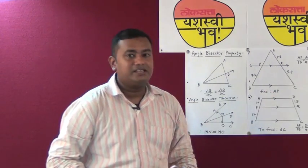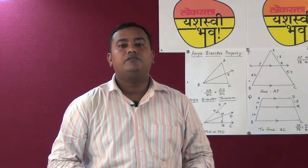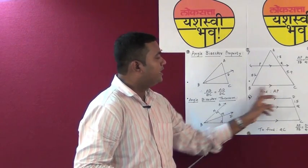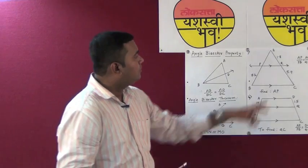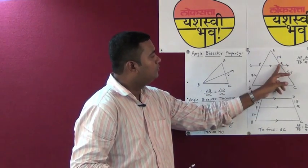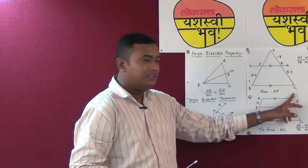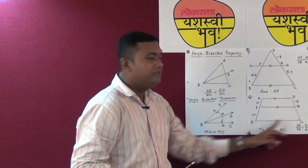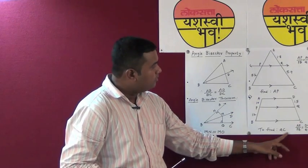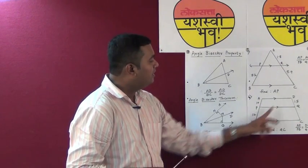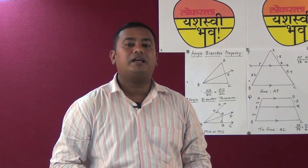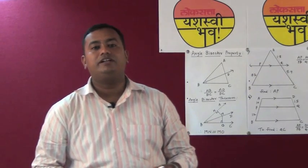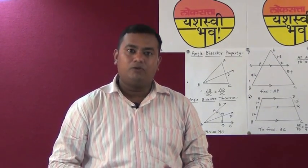Another common mistake is confusing when to write BPT versus the property of intercept made by three parallel lines. For example, if line PQ is parallel to side BC of a triangle, BPT applies and gives AP/PB = AQ/QC. But in a trapezium ABCD with three parallel lines AD, PQ, and BC and two transversals AB and CD, you get AP/PB = DQ/QC — however the reason here is the property of intercept made by three parallel lines, not BPT. Remember: BPT is applicable only when you are talking about a triangle.